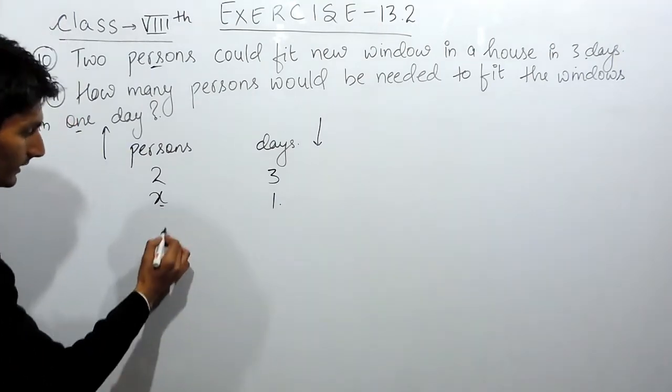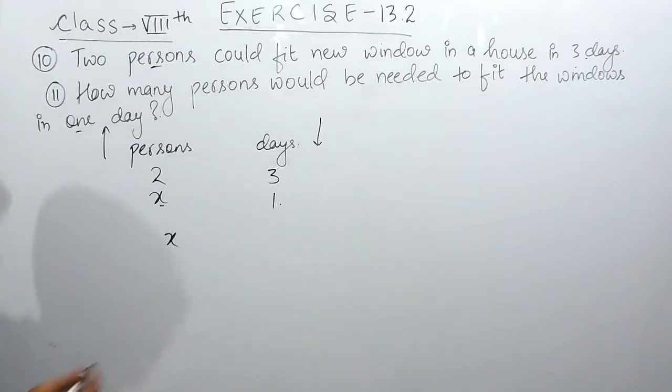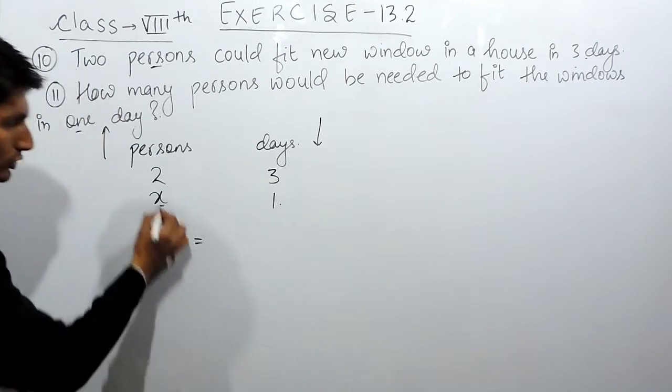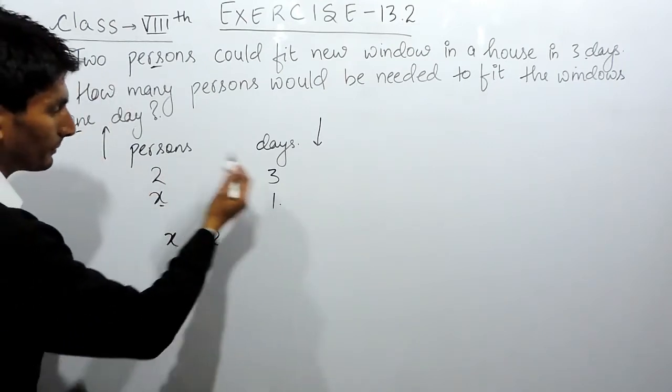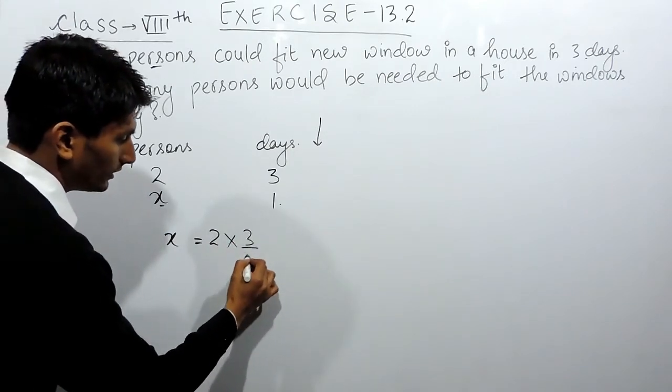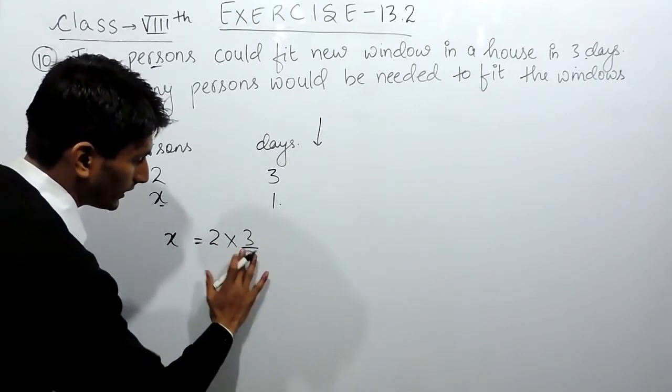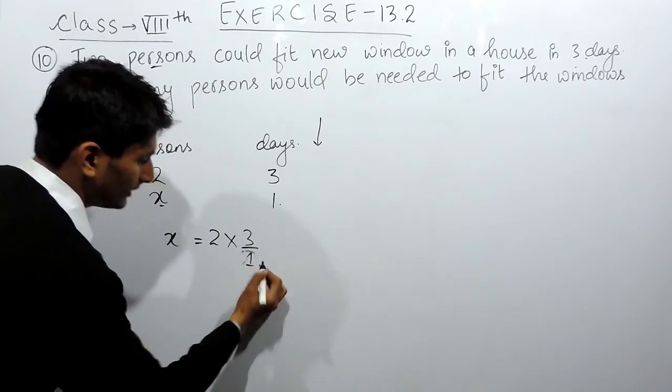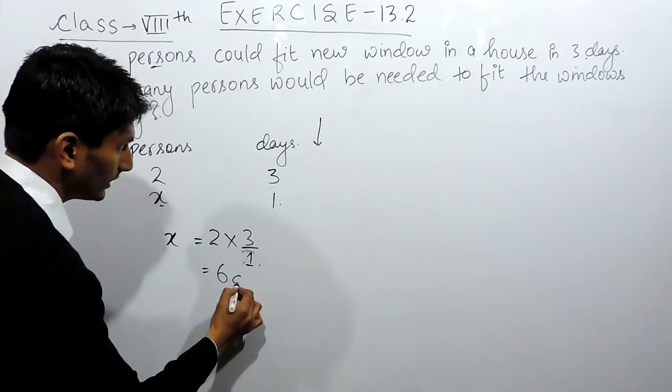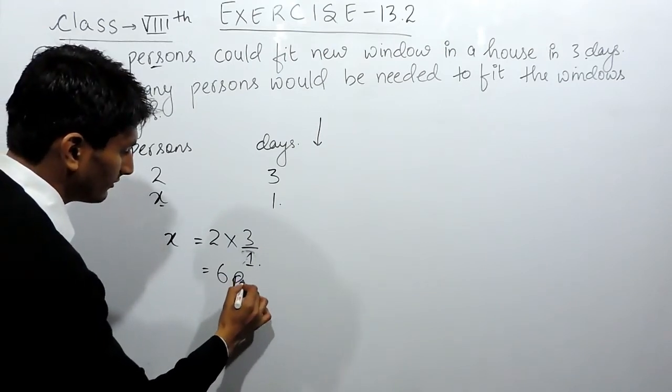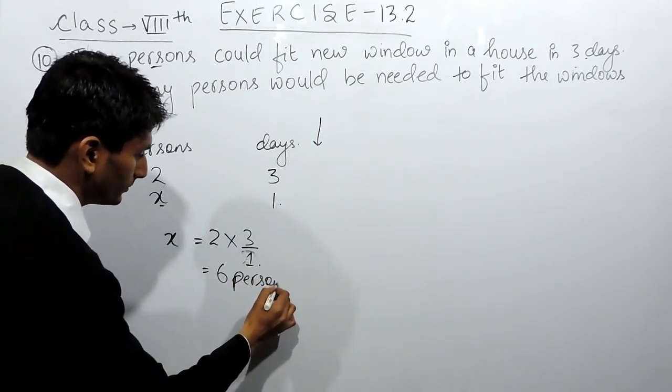So this is x, the value you have to find, equals to the value above this variable can be written here. Because this is inverse proportion, we can write this 3 by 1 as it is. So 3 into 2, the answer will be 6 persons.